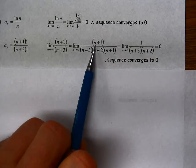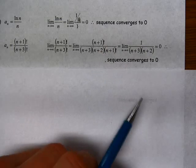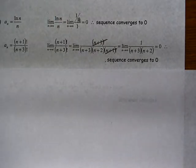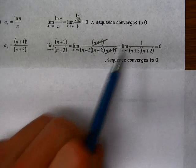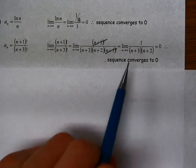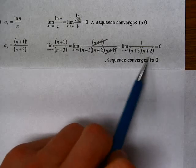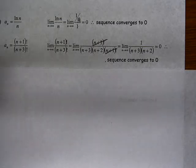n plus 1 factorial is n plus 1 times n minus 1 times n minus 2, etc. So all those terms following the n plus 1 in the numerator and the denominator all cancel out. So all I'm left with is 1 over the n plus 3, n plus 2. And now I can see as n approaches infinity, that denominator is going to grow larger and larger and larger, infinitely large. So my limit is going to be 0 there.